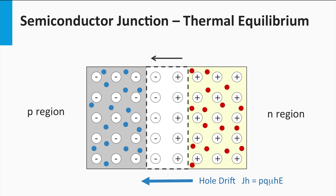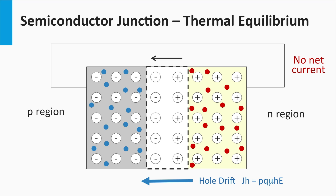Increasing the drift current density can be accomplished by either increasing the density of the minority charge carriers — in this case p — or by increasing the electric field E over the depletion zone. In this example, the p-n junction is in thermal equilibrium. The current densities at the depletion zone are in equilibrium. If you would connect the left side of the p-region and the right side of the n-region with an electrical circuit, we would have no current flowing through the circuit. The electric field will create a built-in voltage over the space charge region.